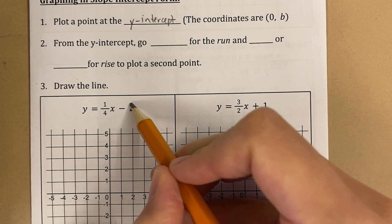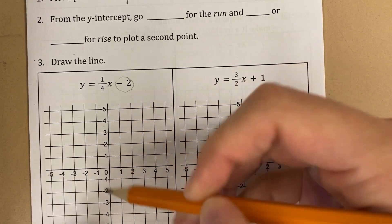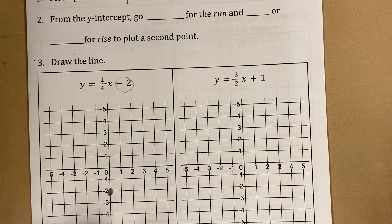So for example, in this case, the y-intercept is negative 2. So I will go to the y-axis, I will find negative 2, and I will plot one point, just like that.